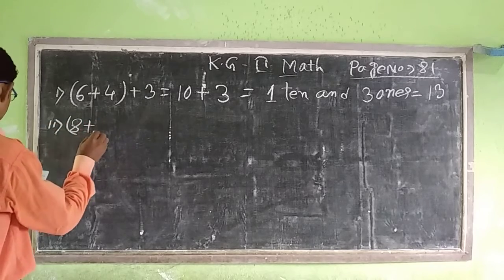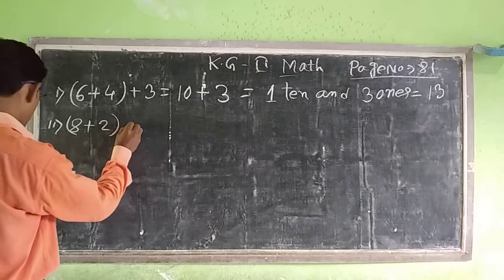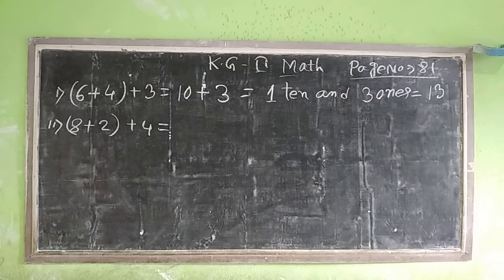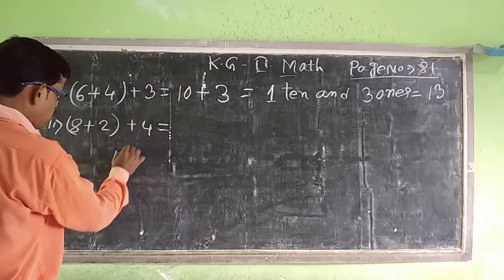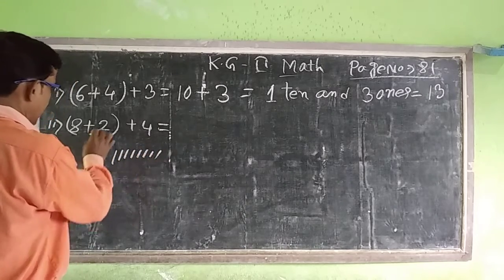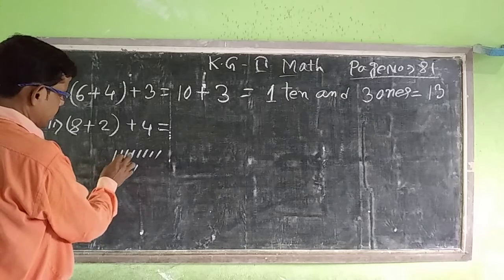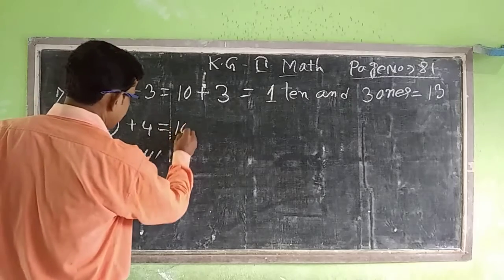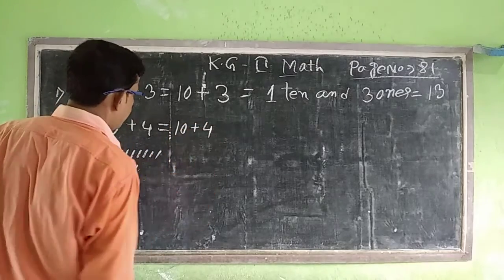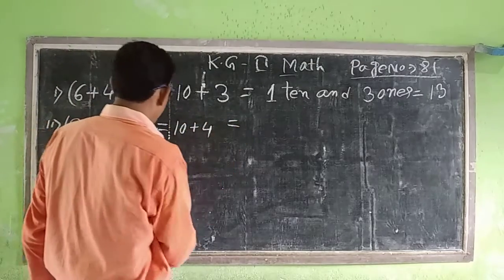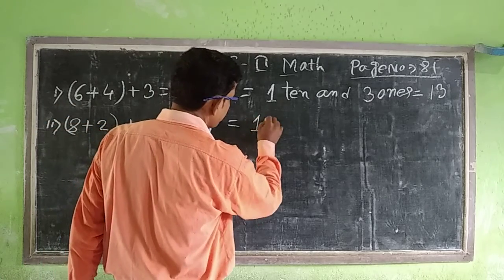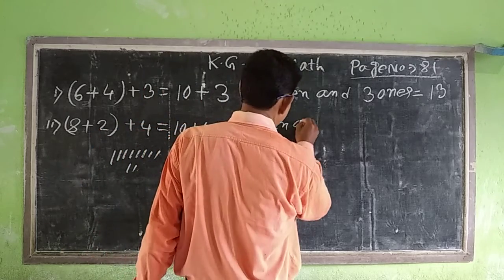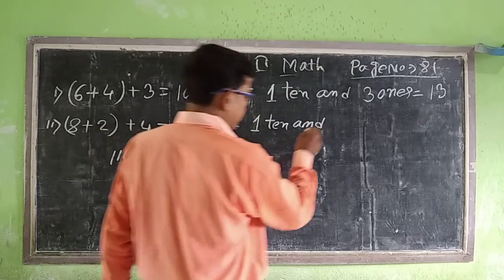Question number 2: 8 plus 2. This is equal to 8, counting 1, 2, 3, 4, 5, 6, 7, 8, and 2. We have to count: 1, 2, 3, 4, 5, 6, 7, 8, 9, 10.